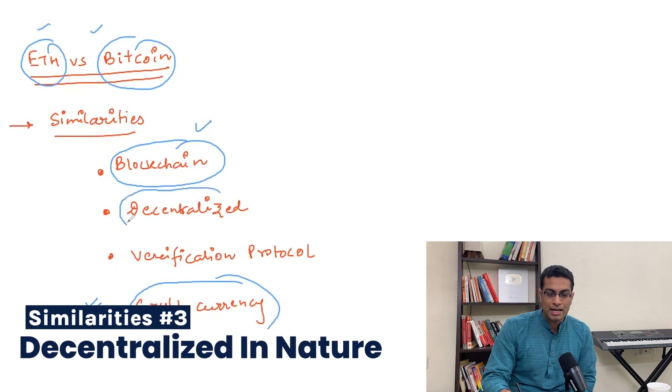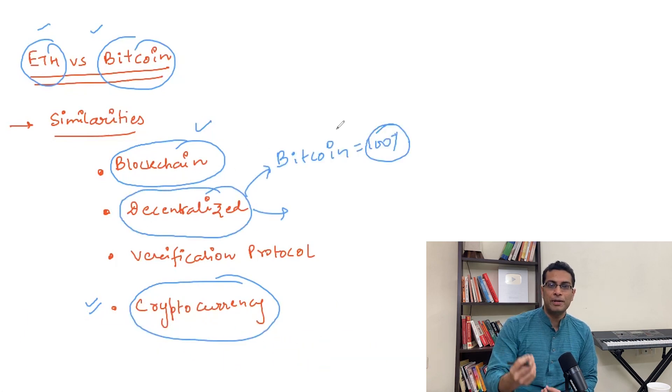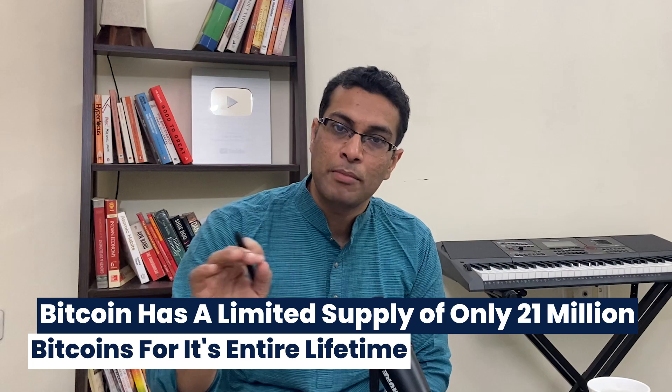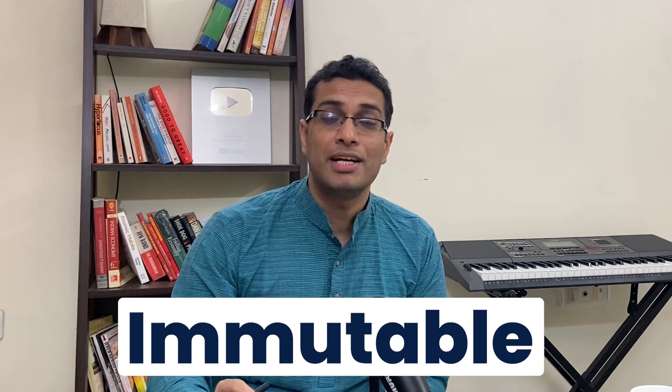Both these blockchain networks are decentralized to a very large extent. In the case of Bitcoin, it is considered to be 100% decentralized. You can understand this decentralization aspect of Bitcoin by looking at its tokenization. Bitcoin has a limited supply — only 21 million Bitcoins that can be released onto the Bitcoin network. After that, the supply of Bitcoin will be exhausted. That piece of information is immutable; it cannot be changed, and no one can make a unilateral decision of increasing or decreasing the supply of Bitcoin.